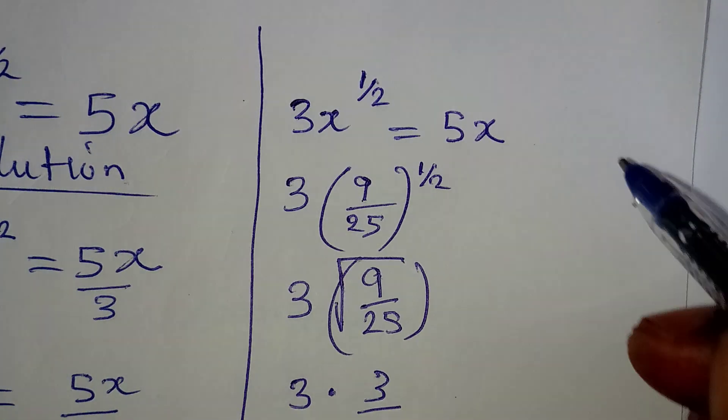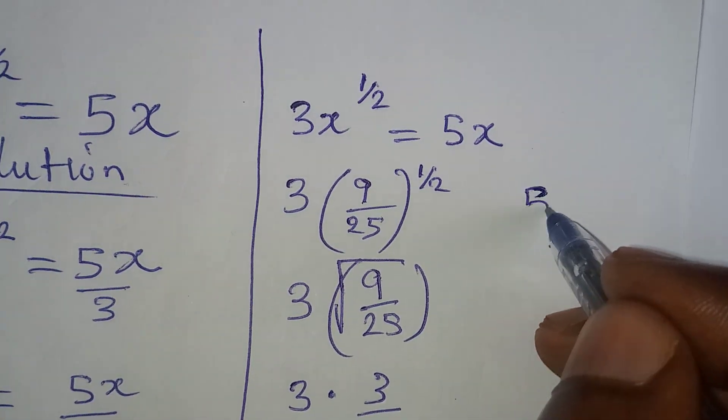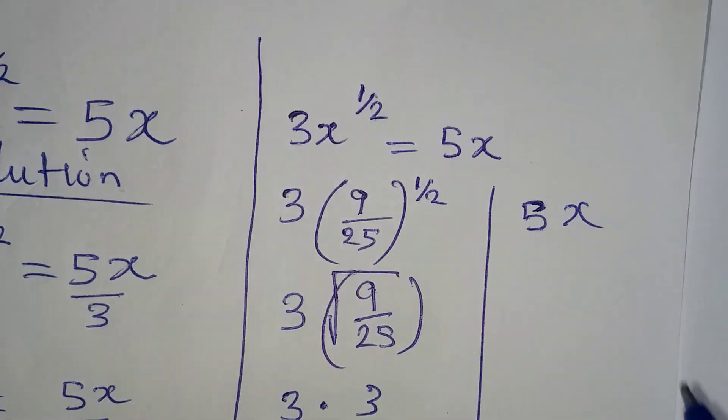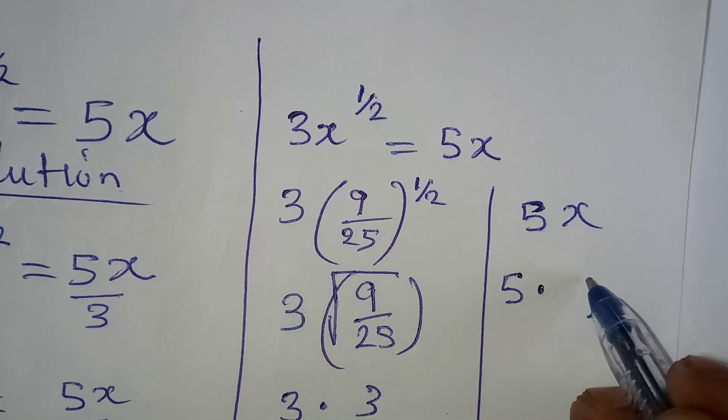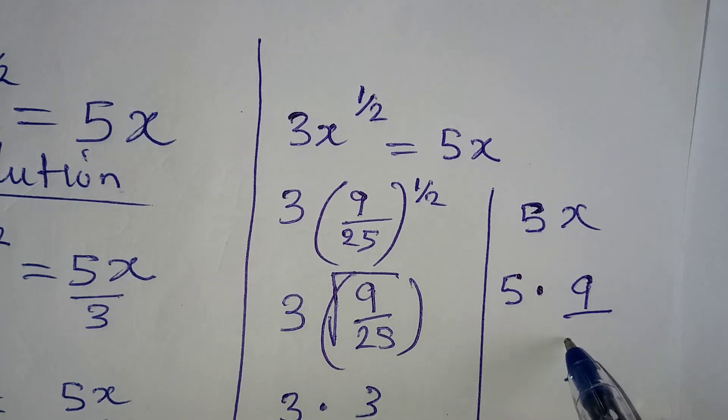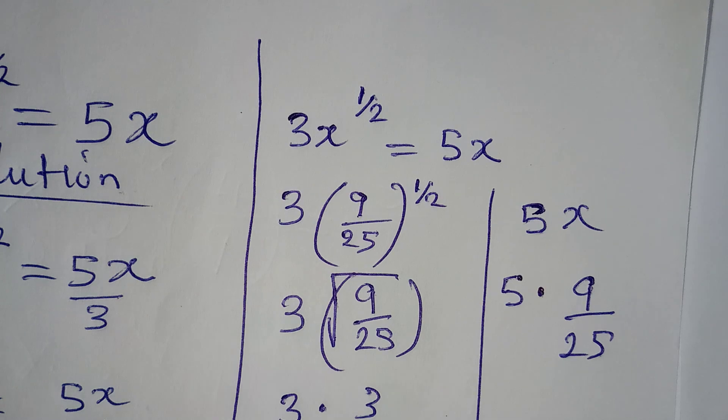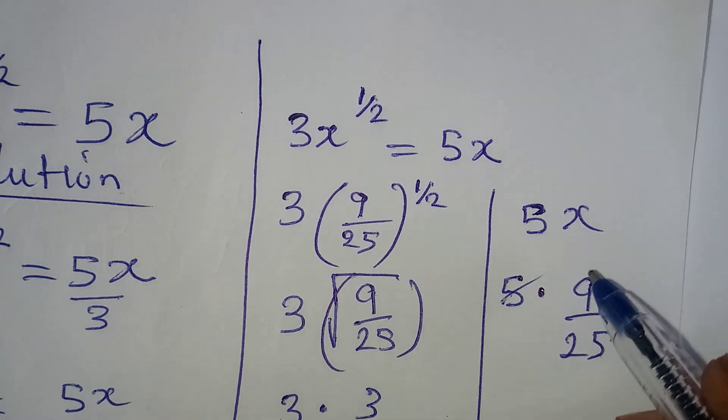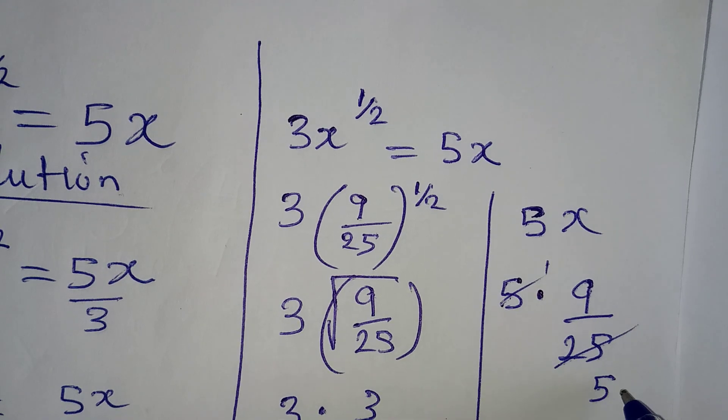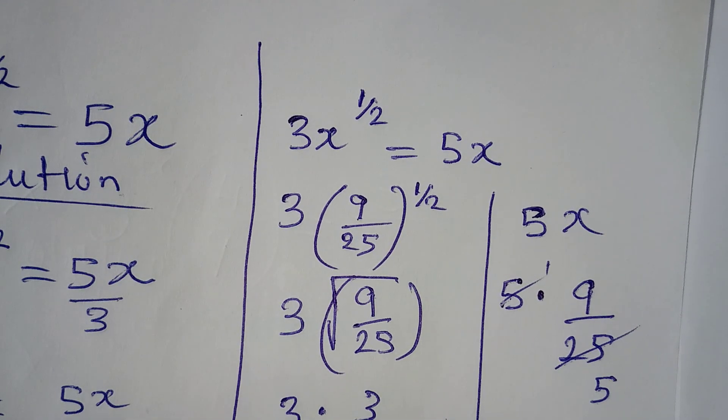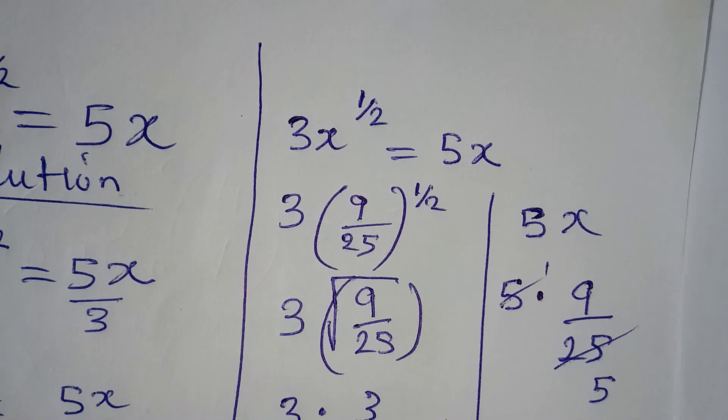Now, let us try the right-hand side, where we have 5x. Now, 5x here will be 5 multiplied by x is 9 over 25. 5 can go here 1 and 5 can go here, so that we'll have 5. And at the end of the day, we have 9 over 5.